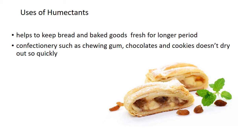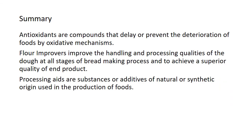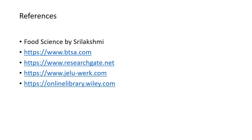Apart from this, humectants are also used in confectionery such as chewing gum, chocolates, and cookies so that they don't dry out quickly. They are also used to extend the shelf life of meat and fish products and to slow down the growth of microorganisms. In today's class we learned about antioxidants, flour improvers, processing aids, their uses and examples. Thank you.